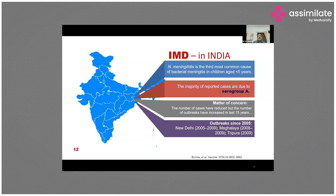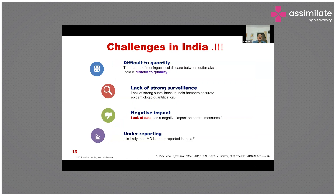Three significant outbreaks have been reported since 2005: in New Delhi from 2005 to 2009, for the first time in the Northeast in Meghalaya from 2008 to 2009, and in Tripura in 2009 — the latter two in the northeastern area of the country.